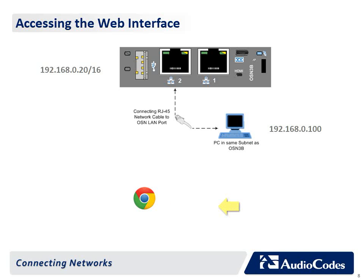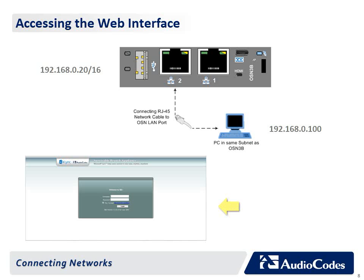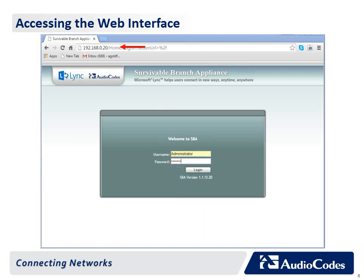Then open a standard web browser and in the URL address field enter the OSN server default IP address. The Survivable Branch Appliance management interface opens and you can log in with the default username Administrator with a capital A and password PASS123 with a capital P.